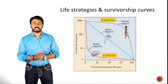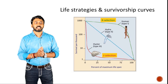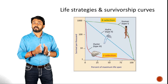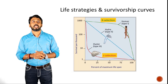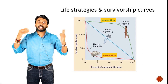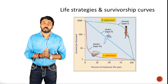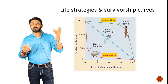The r-selection strategy happens in invertebrates — for example, insects. In insects there are a lot of offspring, and they reach sexual maturity very soon after hatching. They spend very little time caring for their young ones, because there is a probability of losing individual lives in a very harsh or changing environment. So they must produce as many offspring as possible for their survival value. That is called r-strategy.